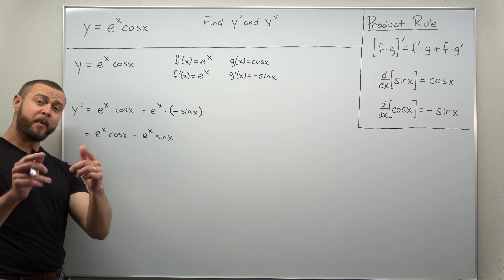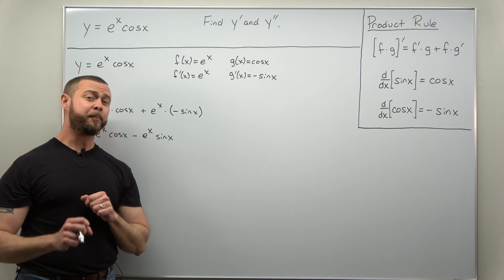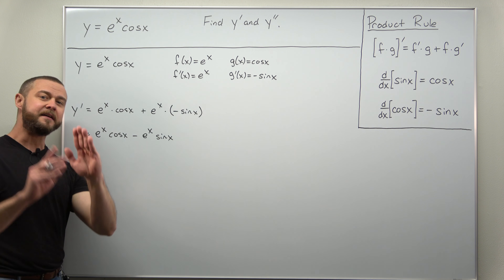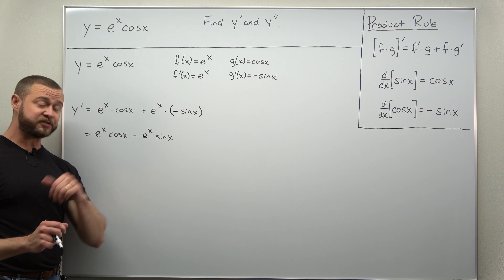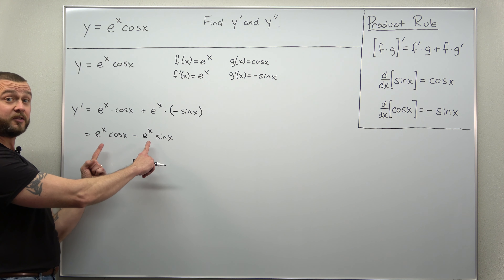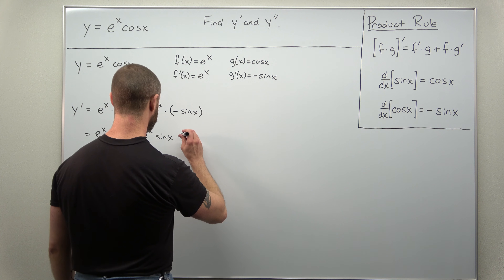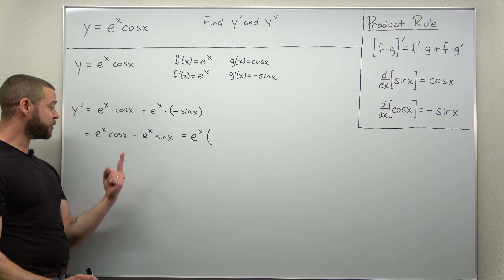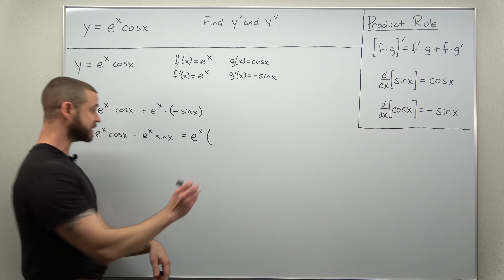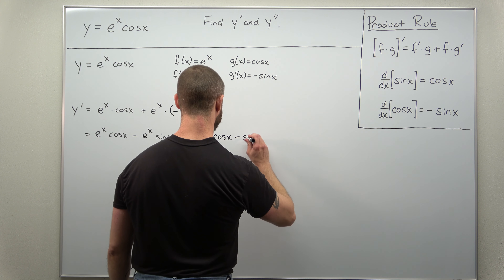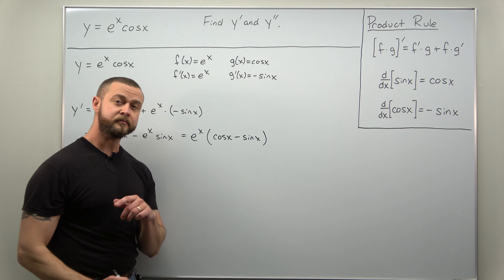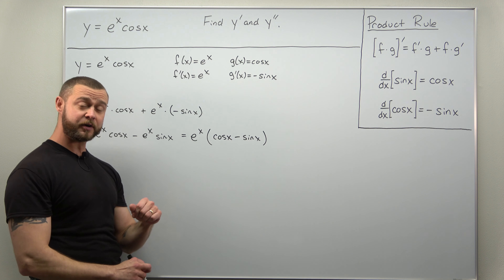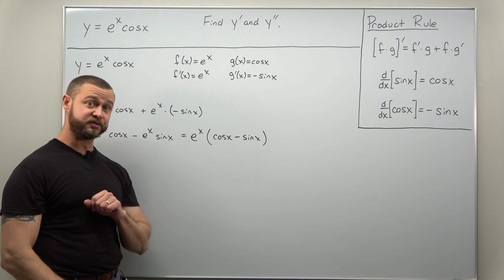You can do that, but I always like to tell my students: see if you can be lazy. Rather than apply the product rule twice, see if you can rewrite this to apply the product rule once. A very common technique when you have exponential functions — because they differentiate to themselves — is to just factor e to the x out. So if we factor the exponential function out, we'll be left with in parentheses: cosine of x minus sine of x. At that point we only apply the product rule once.